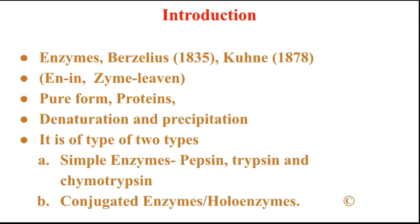Enzymes are of two types: simple enzymes and conjugated enzymes, also called holoenzymes. Simple enzymes such as pepsin, trypsin, and chymotrypsin are simple proteins which yield only amino acids on hydrolysis.